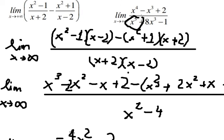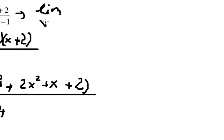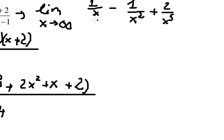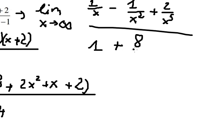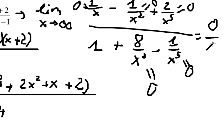For the last question, x to the power of 5 is the highest power in the denominator and x to the power of 4 is the highest on the numerator. We divide everything by x to the power of 5. This gives us terms like 1 over x, 1 over x squared, and 1 over x to the 5th. As x goes to positive infinity, all these terms go to 0, leaving 0 over 1 which equals 0. That is the final answer. Thank you for watching.